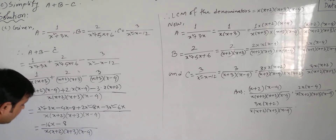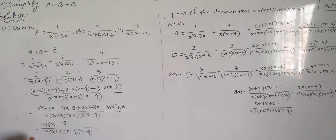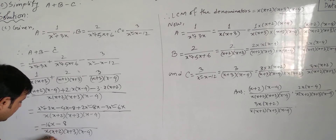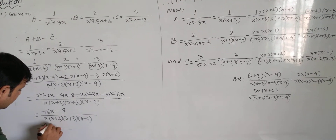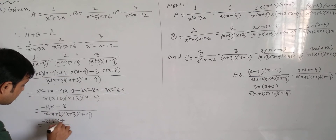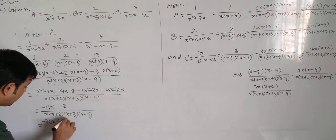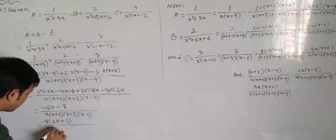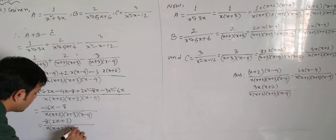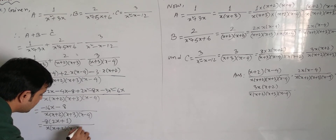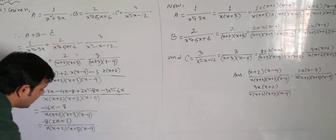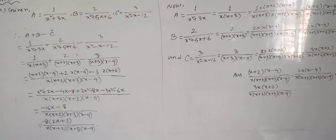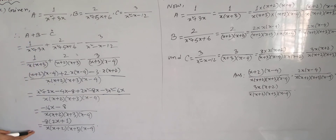Now we can take -8 as common from the numerator: -8(2x + 1). So the final simplified answer is -8(2x + 1) divided by x(x + 2)(x + 3)(x - 4). This is our simplified form of a + b - c, and this is our required answer.